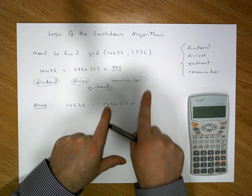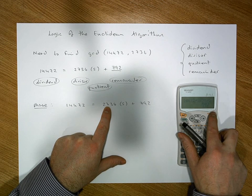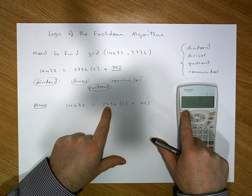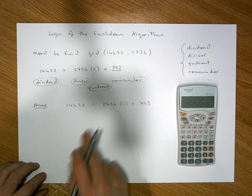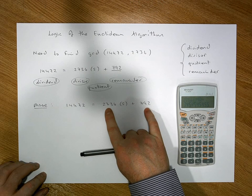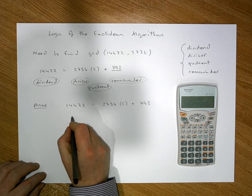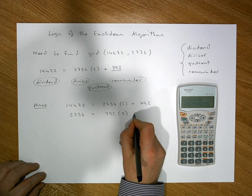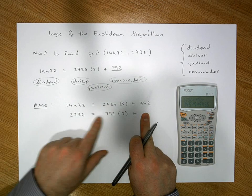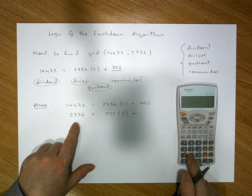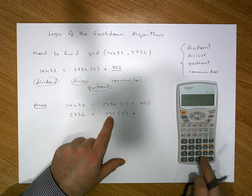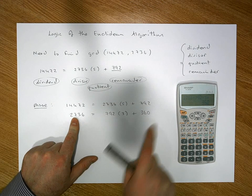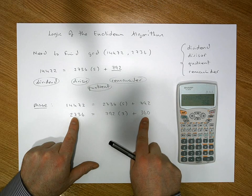So by the division algorithm, 2736 becomes the new dividend and 792 is the new divisor. We end up with 2736 must equal 792 times 3 plus some remainder. The remainder must be equal to 2736 minus 792 times 3, which gives us a remainder of 360. In this application: 2736 is the dividend, 792 is the divisor, 3 is the quotient, and 360 is the remainder. Now we do it again.